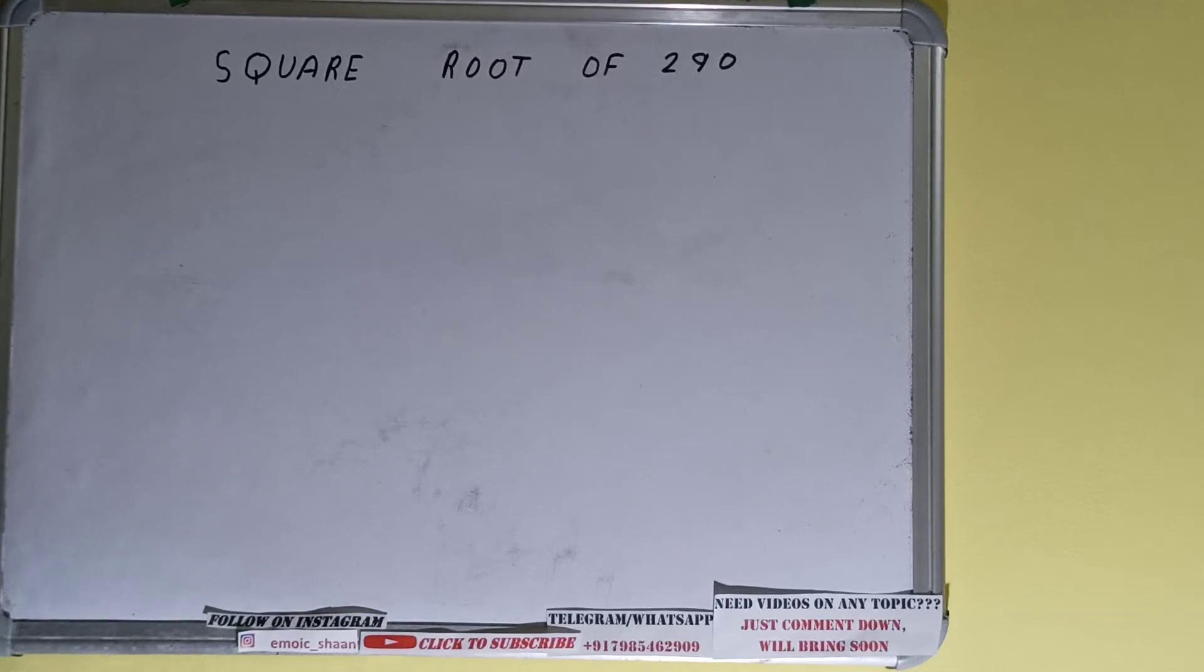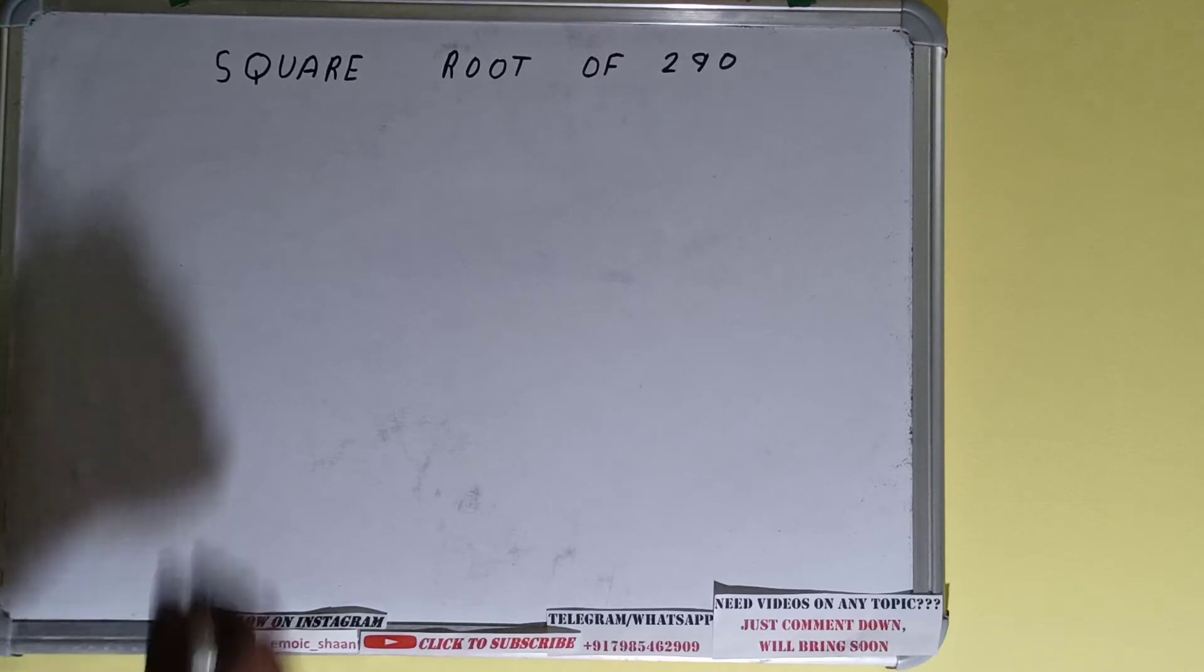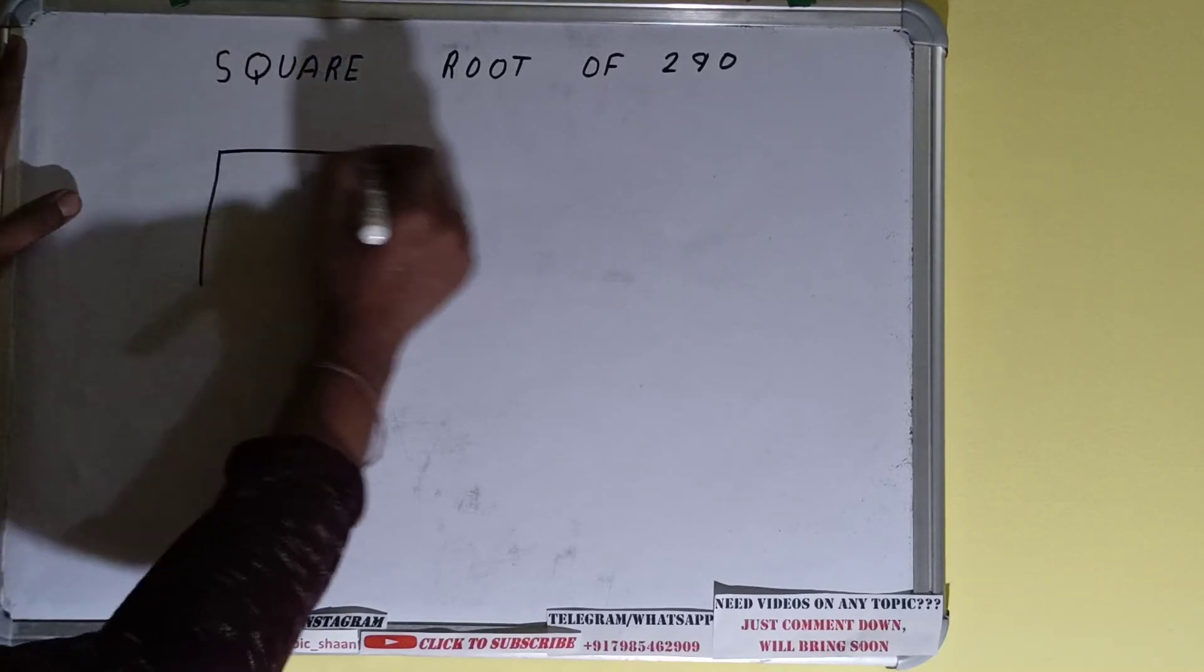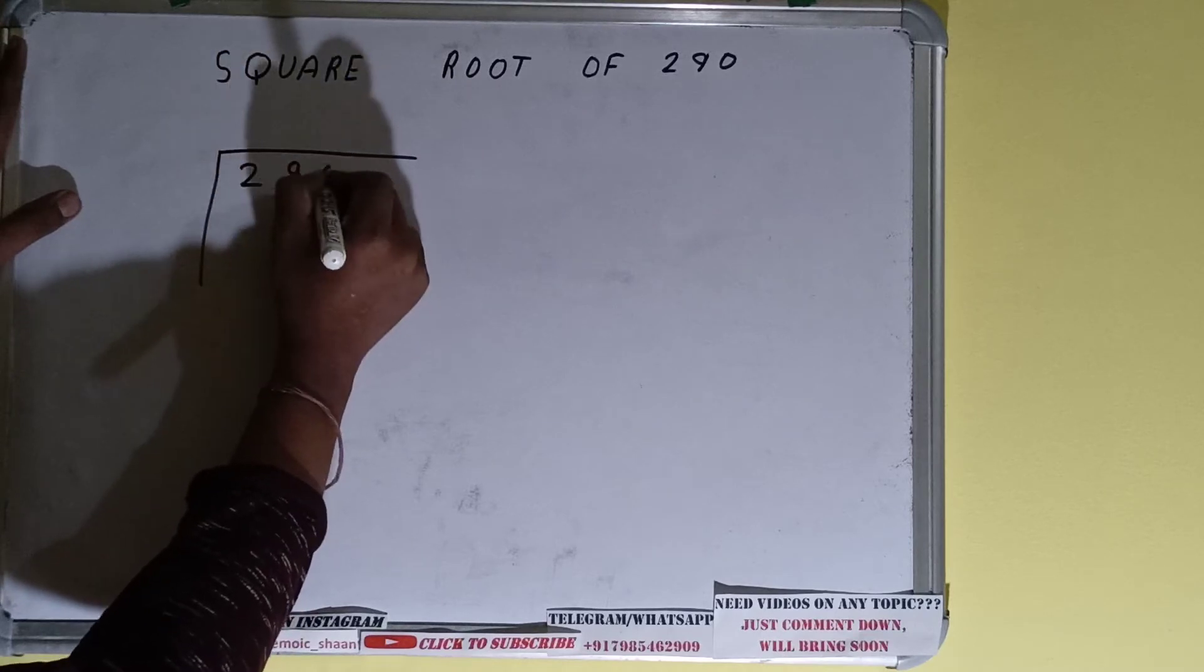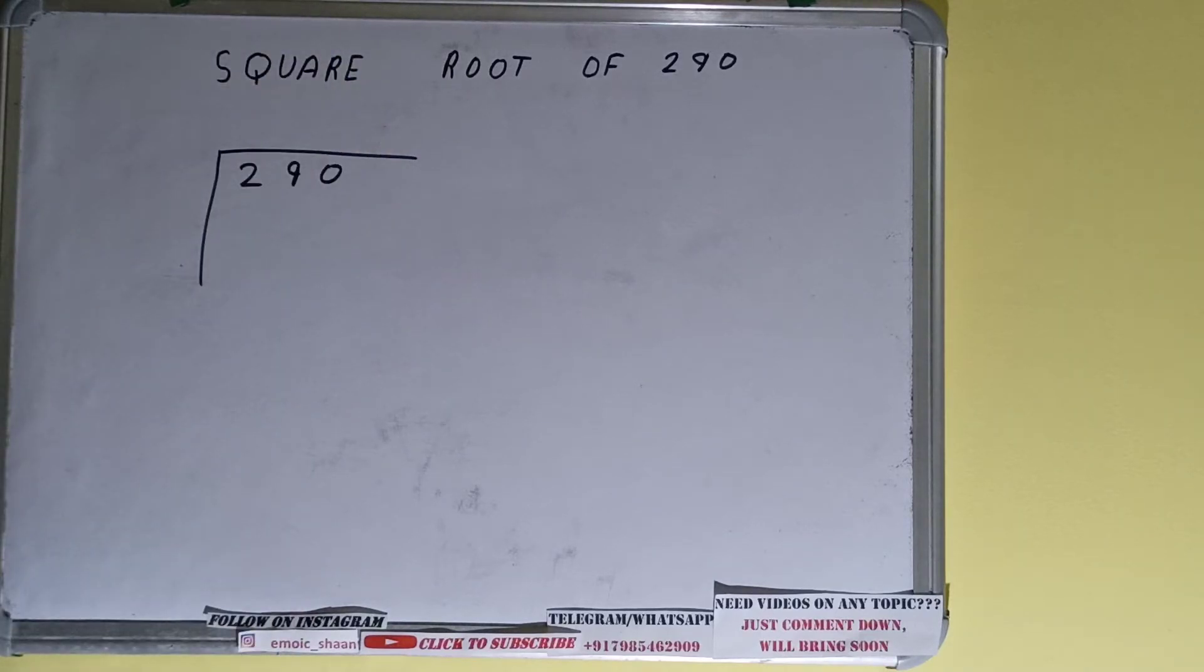Hello friends, and in this video I'll be helping you with the square root of the number 290. So let's start. We'll be using the division method over here. So first we need to write the number like this. The next thing we need to do is form pairs from the right hand side.